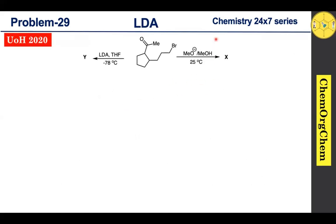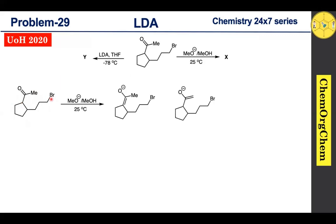Let's look at the first reaction condition, which involves methoxide base in the presence of methanol. Here is our substrate. When you use methoxide base, there are two possible ways to get the enolate ions, since our substrate has an acidic proton here as well as three acidic protons here, which means it can generate both kinetic and thermodynamic enolate. In general, thermodynamic enolate favors formation under sodium hydroxide, potassium hydroxide, or alkoxide-type bases under high reaction temperature.